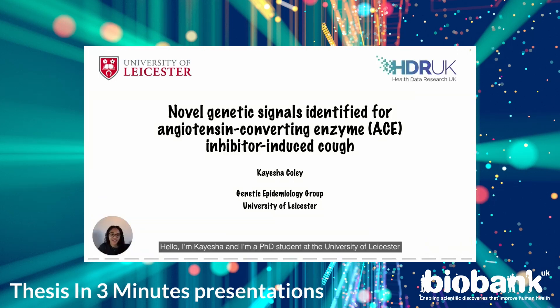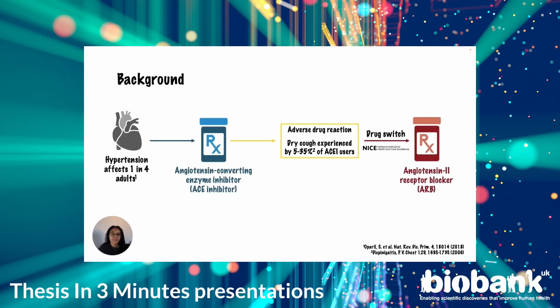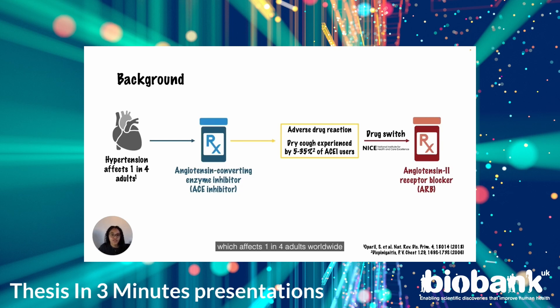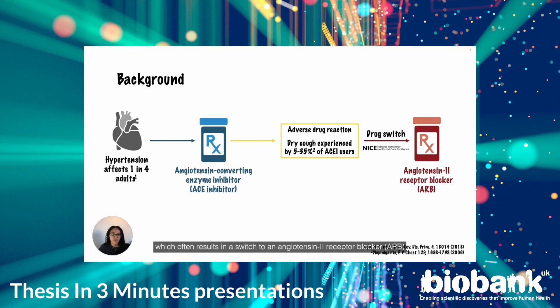Hello, I'm Keisha and I'm a PhD student at the University of Leicester. I've used UK Biobank data to help identify novel genetic signals associated with ACE inhibitor-induced cough. ACE inhibitors are primarily used for the treatment of hypertension, which affects one in four adults worldwide. They are largely well tolerated, but between 5 and 35% of users experience a dry cough, which often results in a switch to an angiotensin II receptor blocker, or ARB, in accordance with current clinical guidelines.